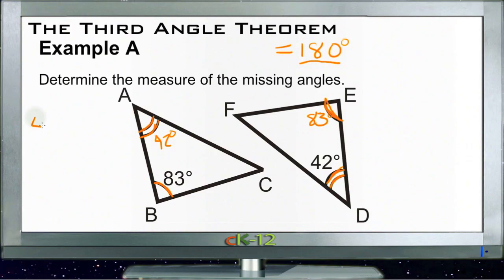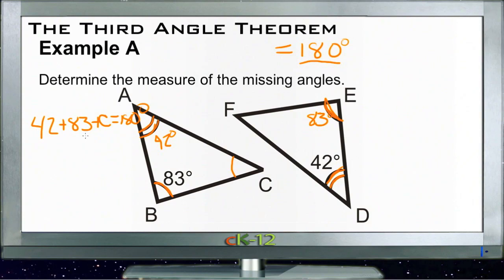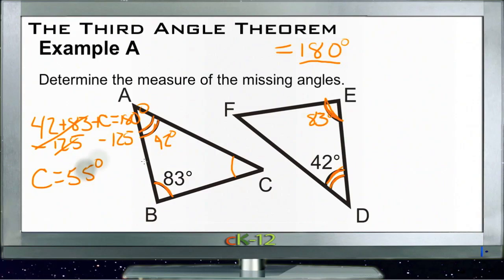Now that we know angles A and B are 42 and 83 degrees, we know that 42 plus 83 plus whatever angle C is must equal 180 degrees. We subtract 42 plus 83, which is 125, from 180, and we get C equals 180 minus 125, which is 55 degrees. So angle C must be 55 degrees.